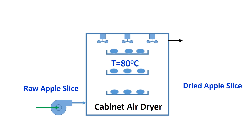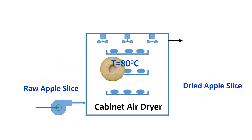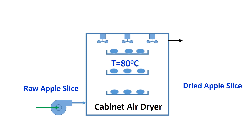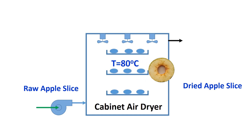First, we need to understand the drying process. Apple slices need to be prepared and placed inside the cabinet dryer. We need to set the dryer at a desired temperature, that is 80°C. After drying, the apple slices need to be cooled and stored at a specific temperature.